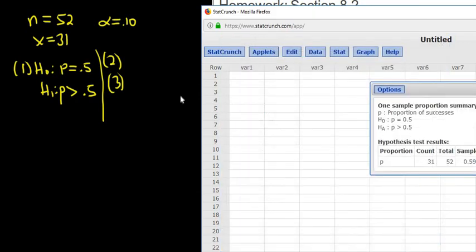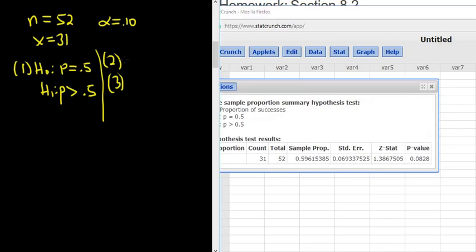And we have steps two and three. Our test statistic is our z-stat. So z equals 1.38675. Should be enough decimals. And the p-value is .0828, okay, that's always step two and always step three.